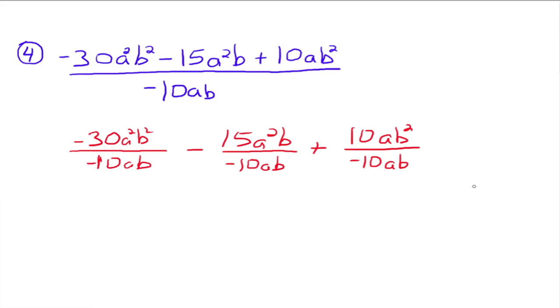So write that out first where you have all the individual fractions. And then just go back and reduce each fraction. So negative 30 over negative 10 would give you a 3. a squared over a would give you an a. And b squared divided by b gives you a b. So this first fraction simplifies down to 3ab.